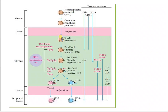This T-cell precursor does not yet contain any special type of receptor — we cannot say it is a killer T-cell or a helper T-cell. It contains general surface markers like CD44 and CD25. After that, the pro T-cell is formed. This pro T-cell is double negative, meaning it does not contain the CD4 receptor or the CD8 receptor.